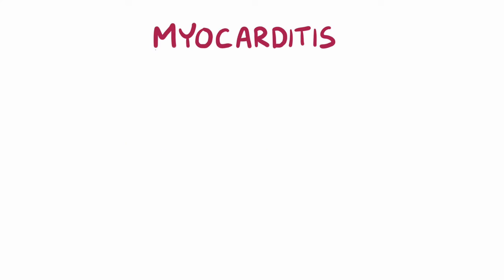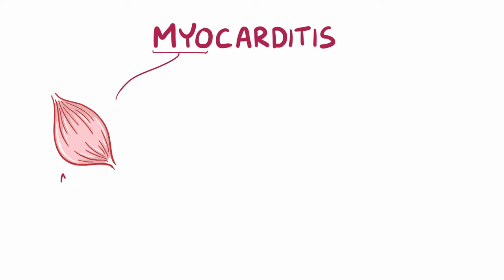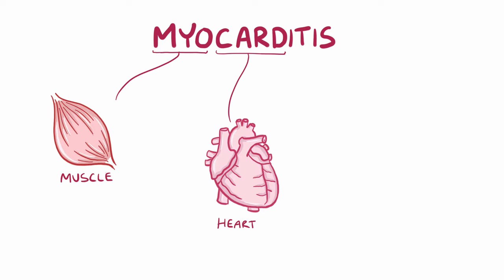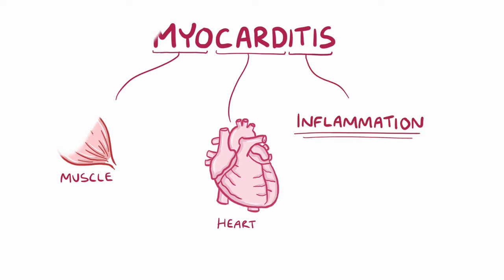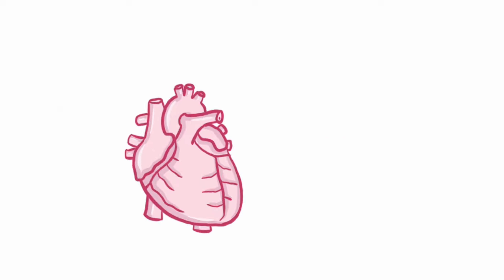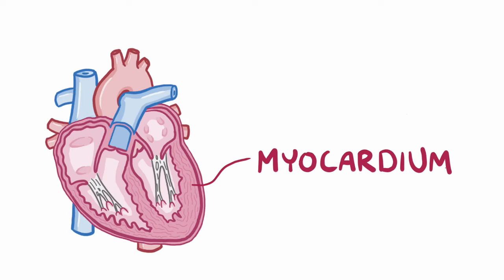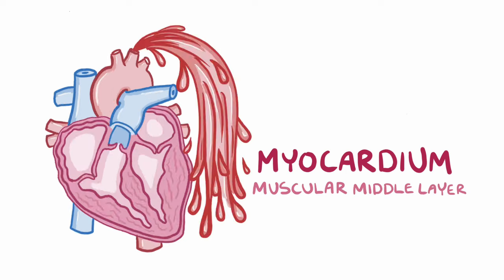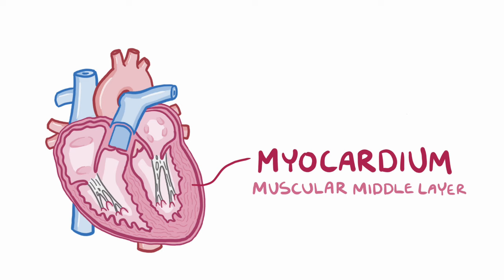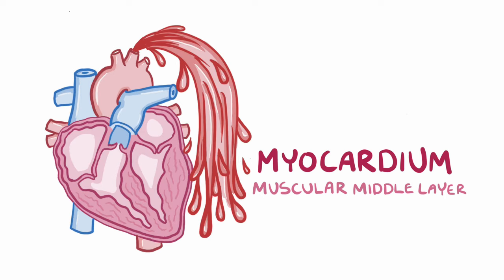With myocarditis, myo means muscle, card means heart, and itis means inflammation. So myocarditis is inflammation of the myocardium, which is the muscular middle layer of the heart wall, which contracts and relaxes so the heart can pump blood all around the body.